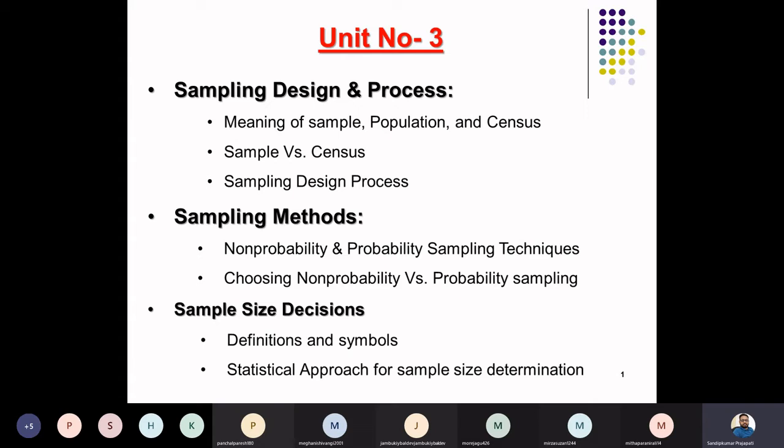The next point is how to choose whether we will go for the sample or we will go for the census study. The third point is the sampling design process. These are the three points which we are going to see under the title of sampling design and process. In point number two, that is sampling methods, first we are going to have the meaning of probability and non-probability sampling.